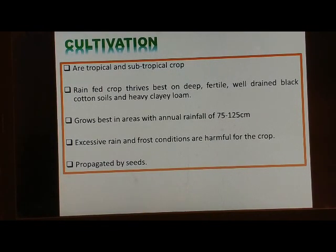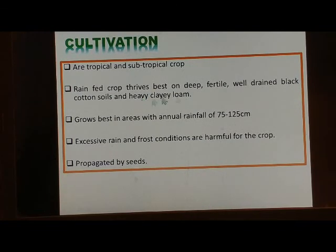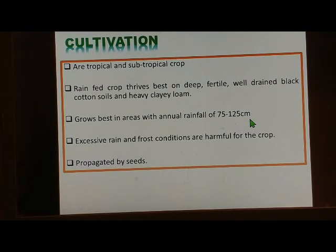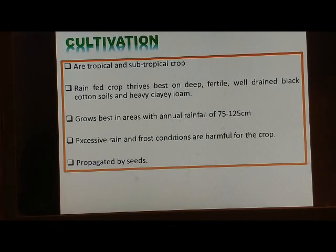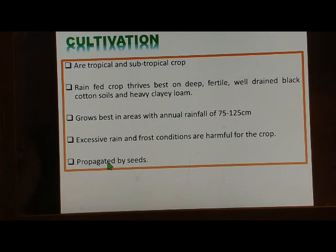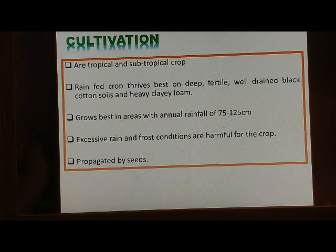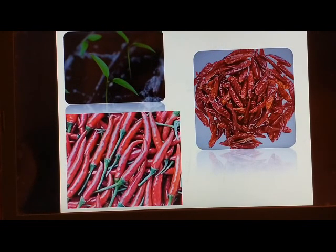Chilies are essentially a tropical and subtropical rain-fed crop. They grow best on deep, fertile, well-drained black cotton soils and heavy clay loam, with an annual rainfall of 75 to 125 centimeters. Excessive rain during the growing period and frost conditions are harmful to the crop. It is propagated by seeds, with seedlings raised in a nursery and planted in the field when about four to five weeks old.